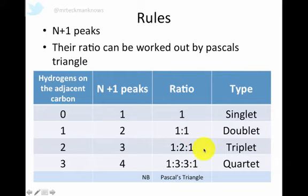So the number of hydrogens that are adjacent to the carbon, the number of hydrogens living on the next door carbon, decides how many peaks the carbon you're looking at, the hydrogens on the carbon you're looking at, splits into. Please make sure that's clear in your head, because it's very easy to get confused.